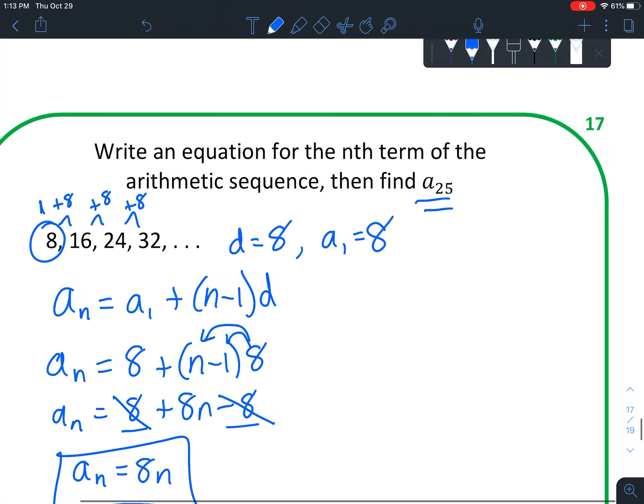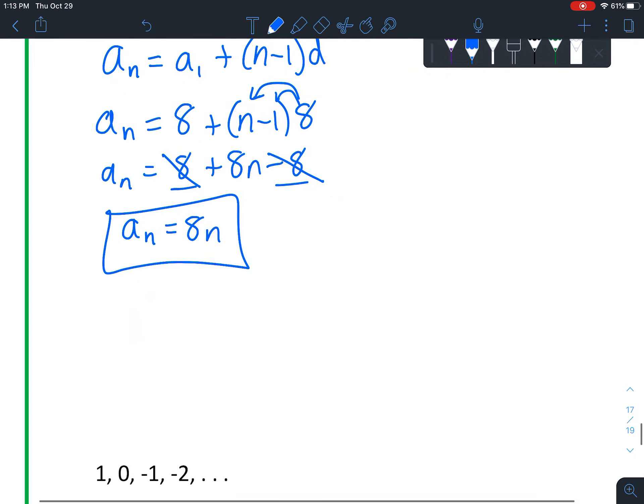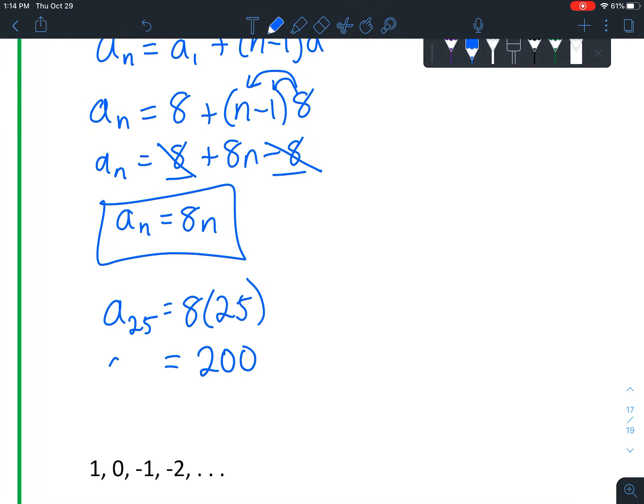Now we're going to find a sub 25. There's no reason that we're finding a sub 25. This is just a thing to practice using this. A sub 25 equals 8 times 25. And then you get 200.